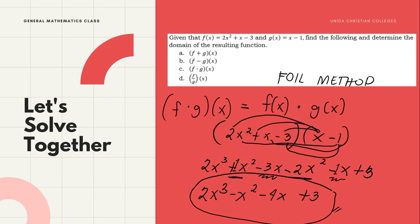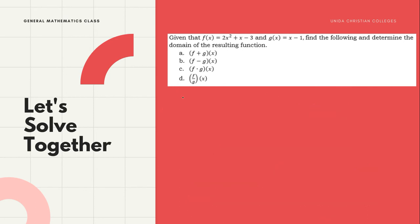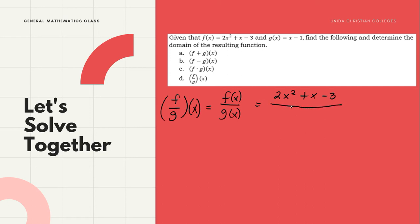Last, for letter D, we have (f/g)(x), defined by f(x) divided by g(x). So, f(x) over g(x): (2x² + x - 3) divided by (x - 1).